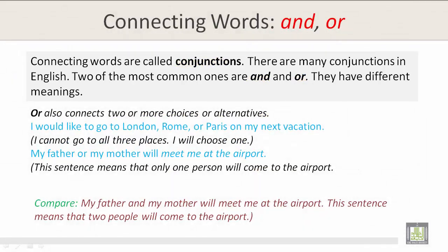The conjunction or also connects two or more choices or alternatives. For example: I would like to go to London, Rome, or Paris on my next vacation. This means I cannot go to all three places — I will choose one.